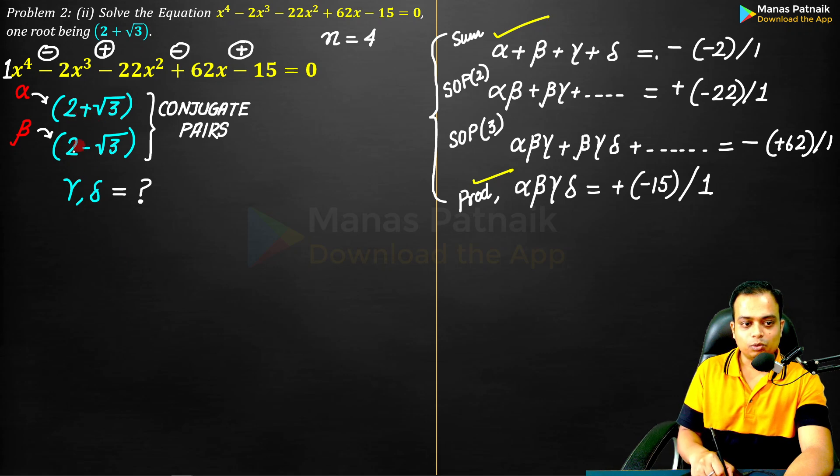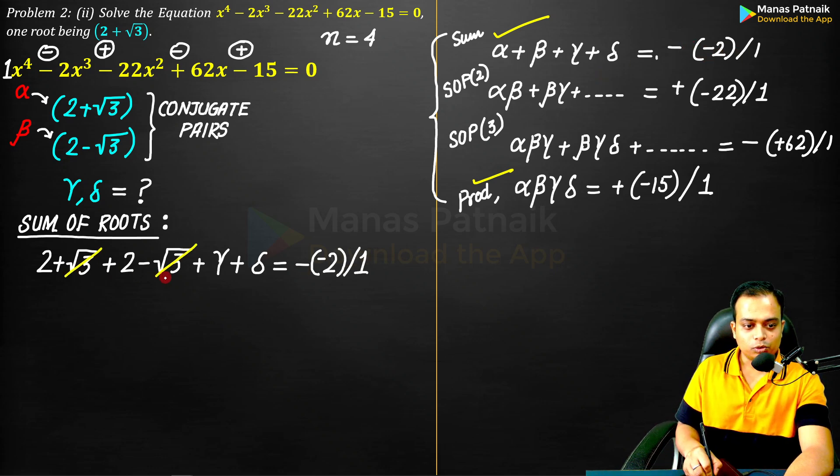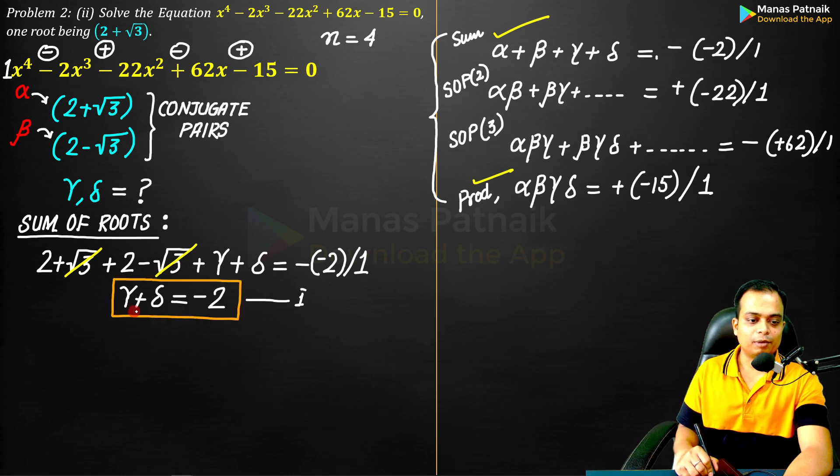Let's take the sum of 2 + √3, 2 - √3 + γ + δ. And that is going to be equal to -(-2)/1. √3, √3 cancel. 2 + 2 is 4. And here we have +2. So +2 - 4 will give you the value of γ + δ. That is our equation number 1.